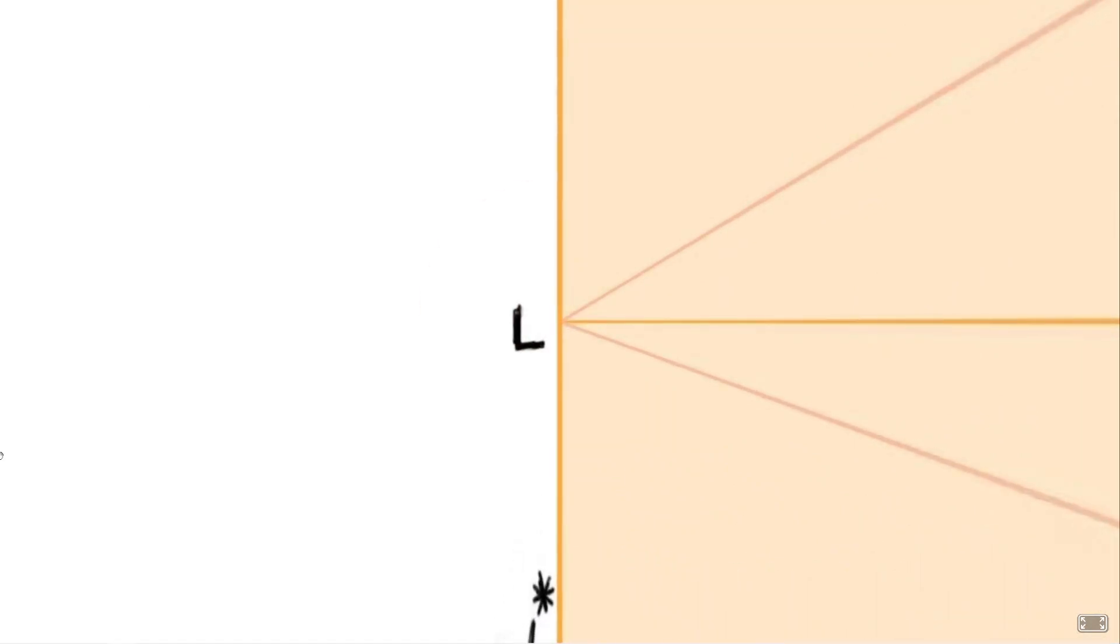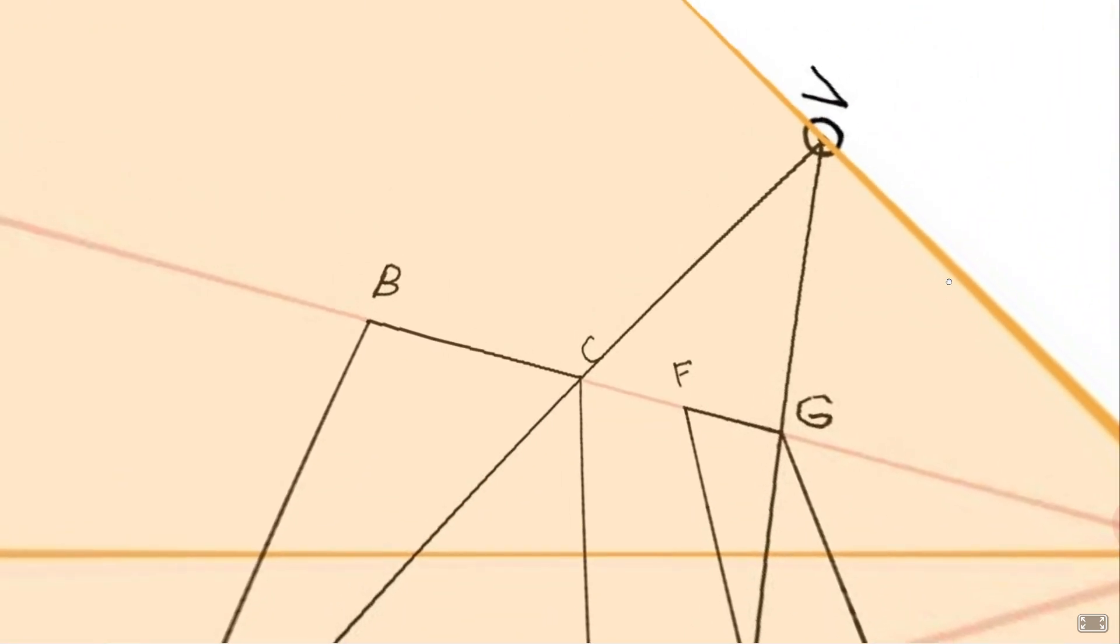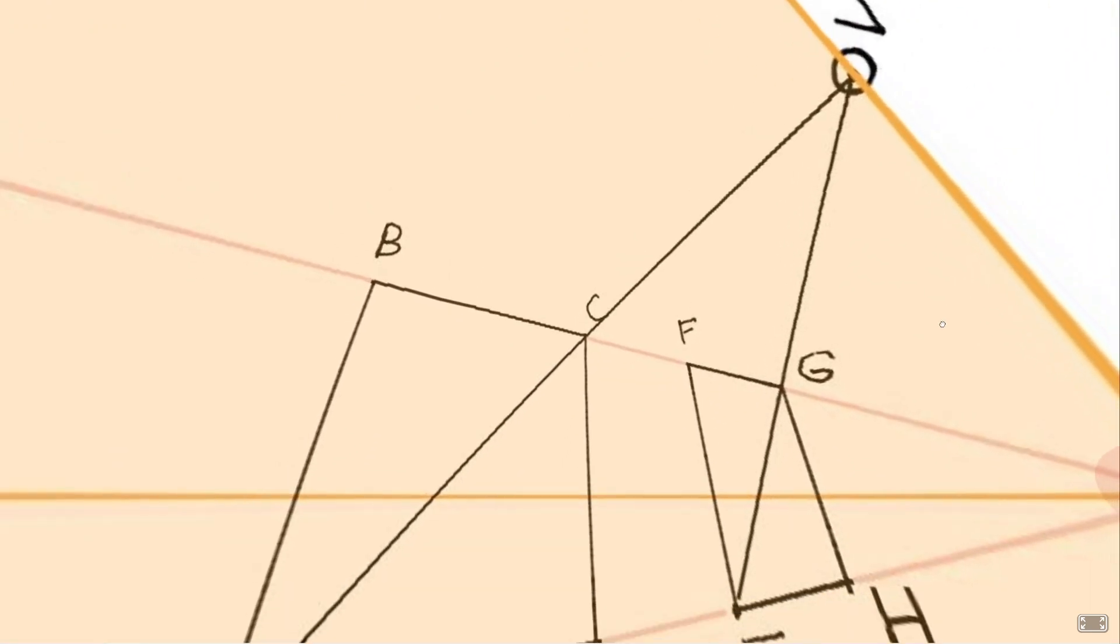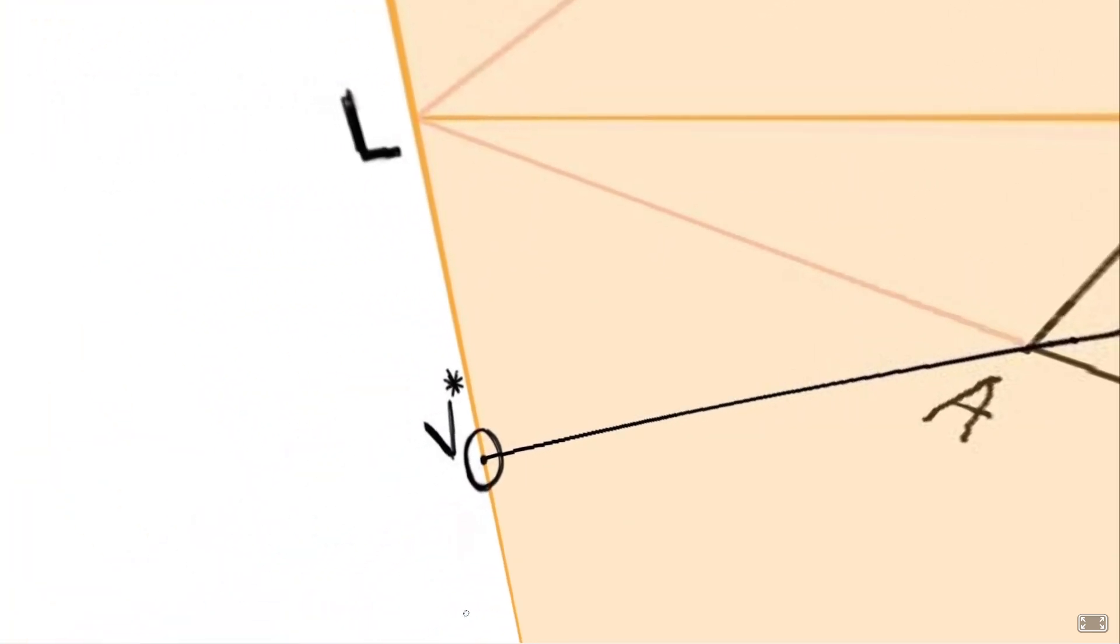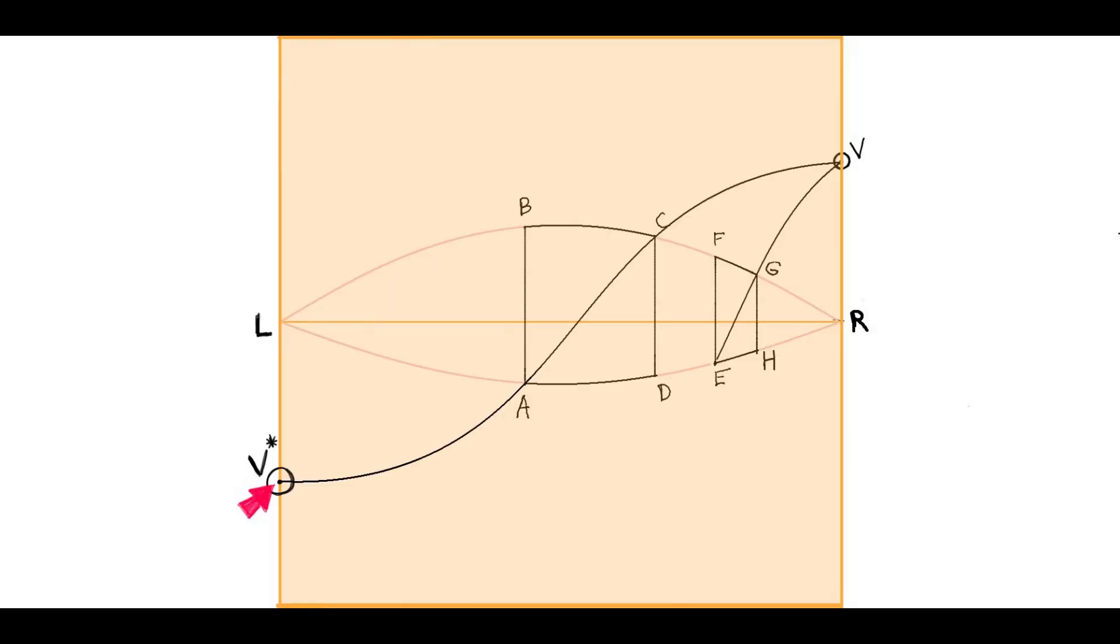Every line has exactly two vanishing points in a full spherical perspective and they are diametrically opposite across the sphere. This antipode relation is actually really useful and we will see why in future tutorials. For now, I will just say that we could just as well have used that other vanishing point for our construction and it would have worked just as well.